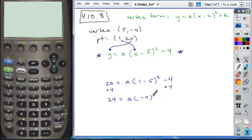Continue to expand and simplify. Negative 4 squared is 16. And then isolate the a completely by dividing both sides by 16. And if we reduce our fraction here, 8 goes into 24 three times and 8 goes into 16 twice. And so here's our a value, 3 halves.